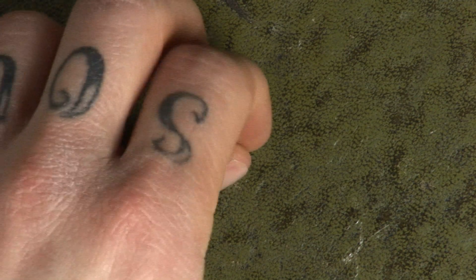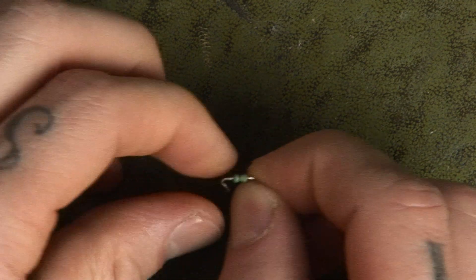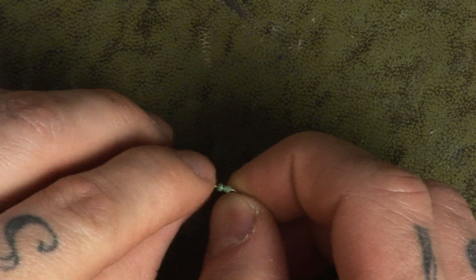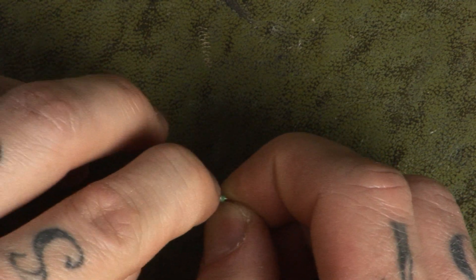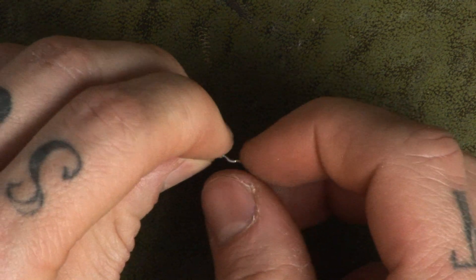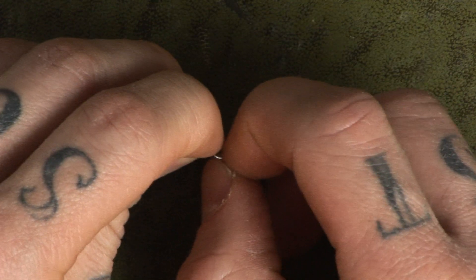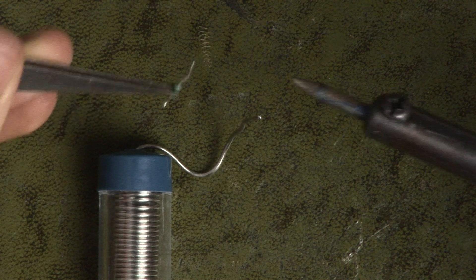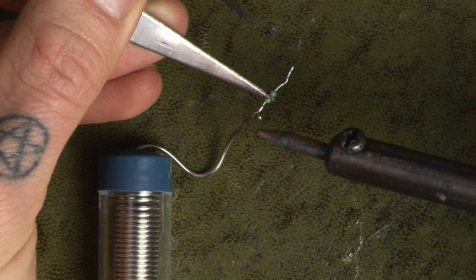Once your resistor is out of the board, you will need to straighten out the leads on your resistor. Once you've straightened the leads out, tint both ends with a little solder.